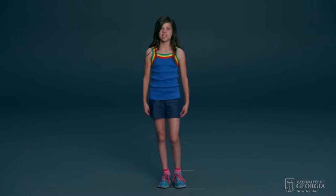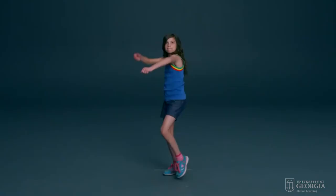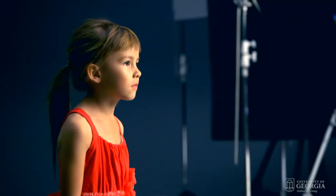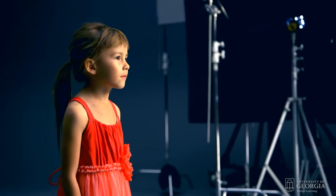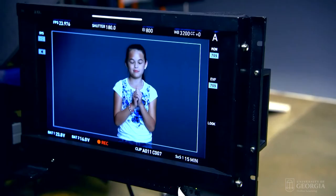A 10-year-old named Dakota is then asked to show what it looks like to run like a girl, throw like a girl, and fight like a girl. When asked what it means to 'run like a girl,' she says it means 'run as best as you can.' When asked if he thought he just insulted his sister, a boy responds: 'I mean, yeah, insulted girls, but not my sister.'